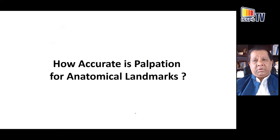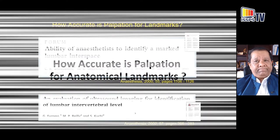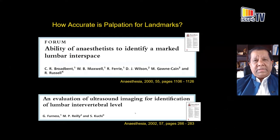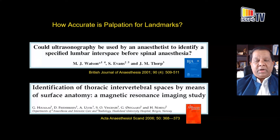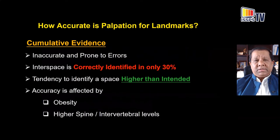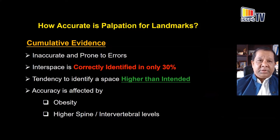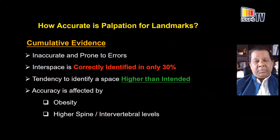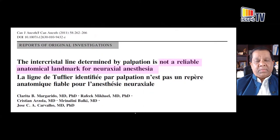Let's look at how accurate your ability to identify a given lumbar interspace using palpation is. In the early 2000s, investigators compared palpation against ultrasound, CT, or MR imaging. Cumulative data suggests that palpation is very inaccurate — you correctly identify the space in only about 30% of the time. There is a tendency to identify an interspace higher than intended, and accuracy is often affected by obesity and how high up the spinal column you go.